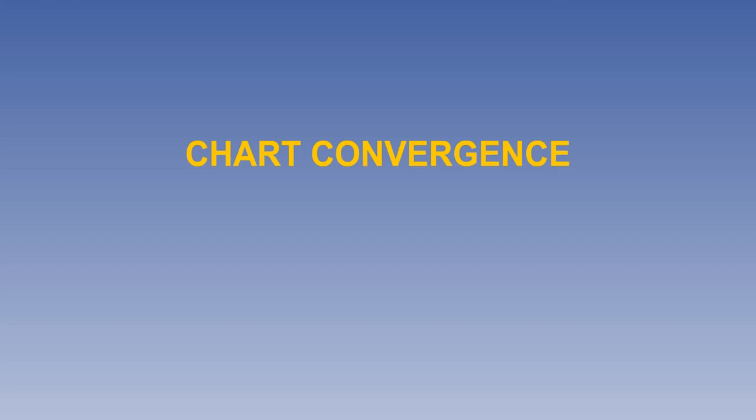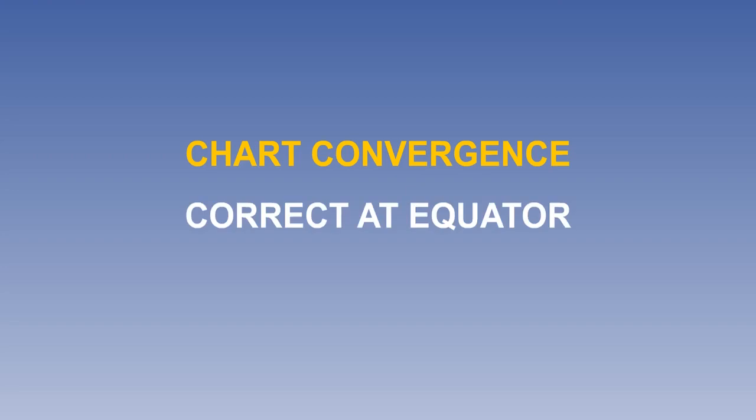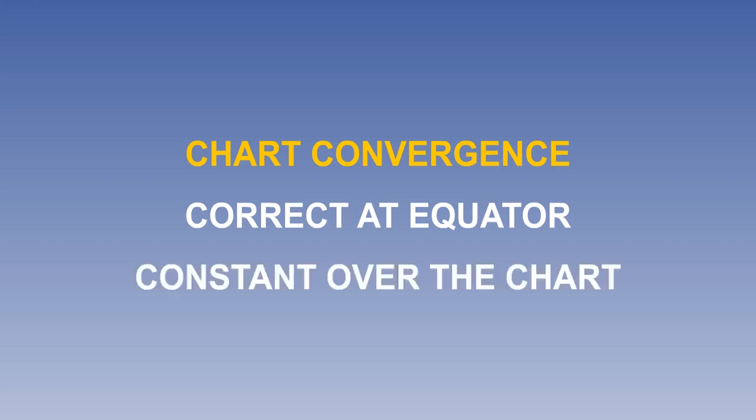but nowhere else. Therefore, Mercator chart Convergence is correct at the equator, but nowhere else. Mercator Convergence is constant all over the chart — it is always zero.